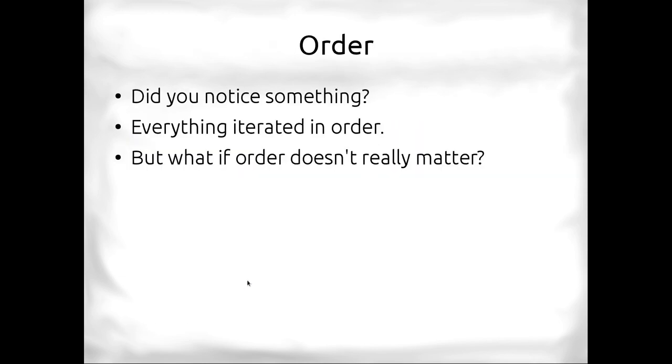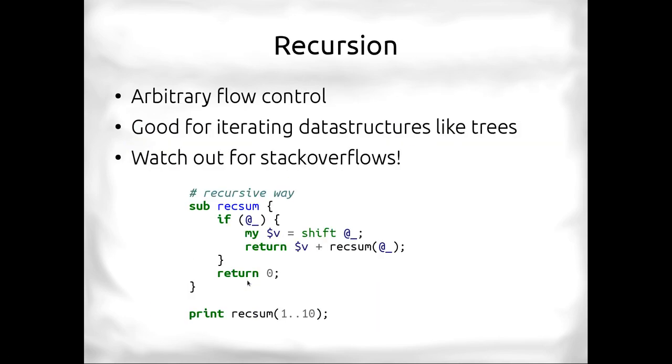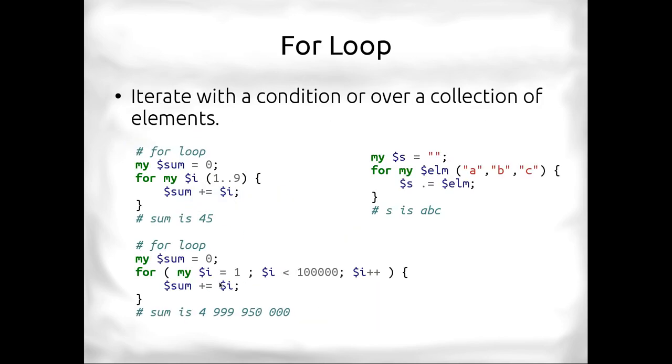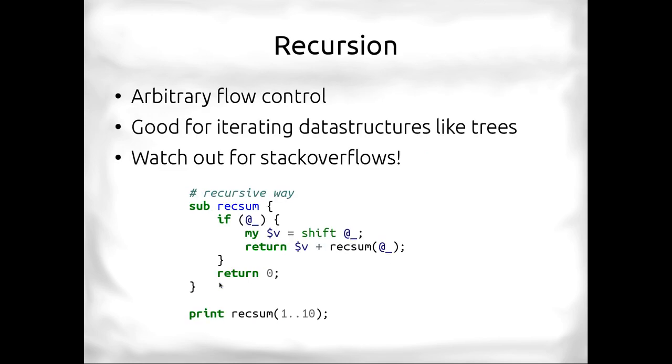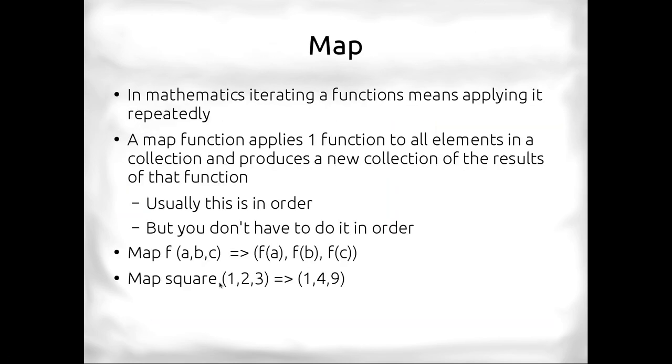Alright, so you've got to consider if order doesn't matter. Remember, we can do a sum in any order. Any part of the sum can be done out of order, and it'll still come up with the same results. This starts relating into the map function. In mathematics, iterating a function means applying it repeatedly. Applying a map function applies one function to all the elements in the collection, and produces a new collection of the application of that function, the results of that function. Usually, this is in order, so the results are in order. But you don't have to do the execution in order.